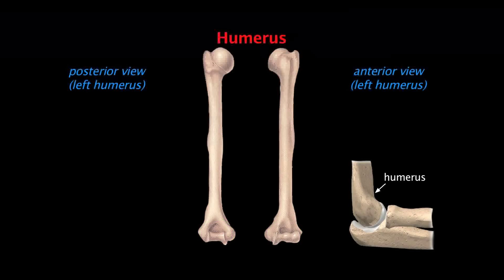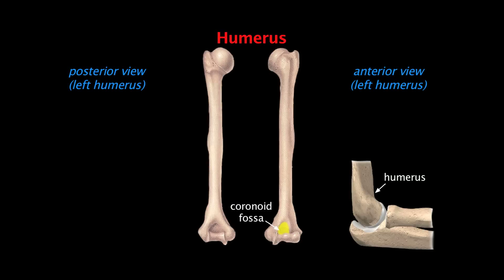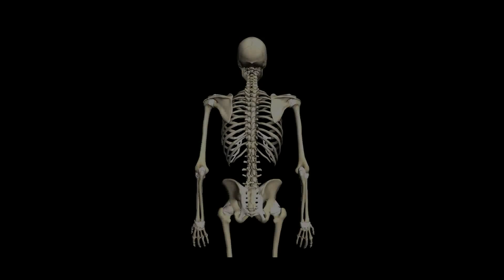On the posterior surface there's a large depression called the olecranon fossa, which allows for full extension of the elbow. On the anterior surface there are two smaller depressions: laterally is the radial fossa, which accommodates the head of the radius during flexion, and medially is the coronoid fossa, which receives a process of the ulna during flexion. The two articular surfaces of the condyle are the laterally located capitulum, which articulates with the head of the radius, and the more medial pulley-shaped trochlea, which articulates with the ulna.